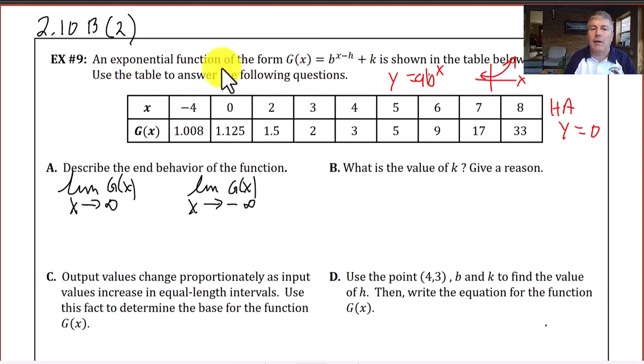So we're going to use the table below to answer the following questions. We've got our table for x and g of x here, and the first question, A, says describe the end behavior of the function. So that's describing the limit of the function as x goes to positive infinity. We can see here as x goes to positive infinity, our y's are increasing and they continue to go on. So the answer to that is positive infinity.